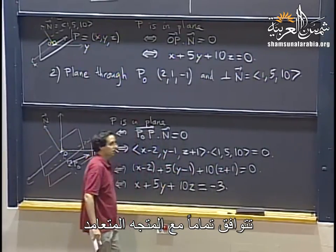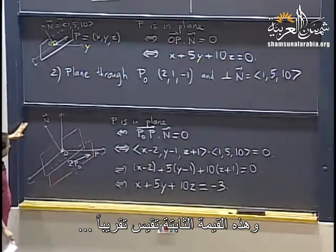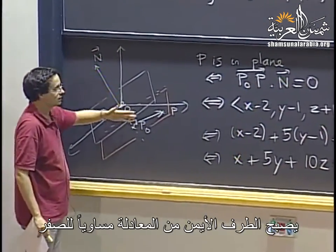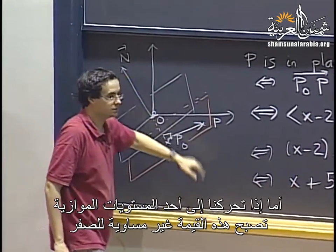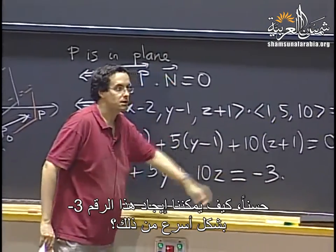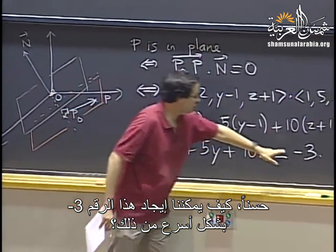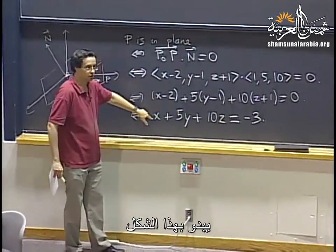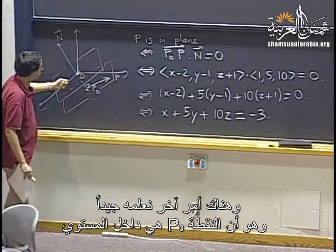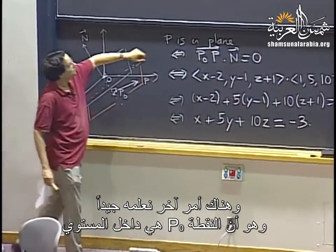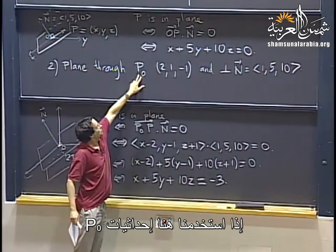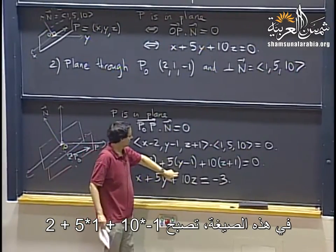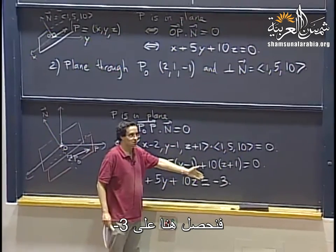So that is something you should remember about planes: the coefficients A, B, C in the equation Ax plus By plus Cz equals D correspond exactly to a normal vector. The constant term D roughly measures how far you've moved from the origin. If you have a plane through the origin, the right-hand side is zero; if you move to a parallel plane, this number changes. We can find D by plugging the coordinates of P0 into the left-hand side: 2 plus 5 times 1 plus 10 times minus 1 gives minus 3.